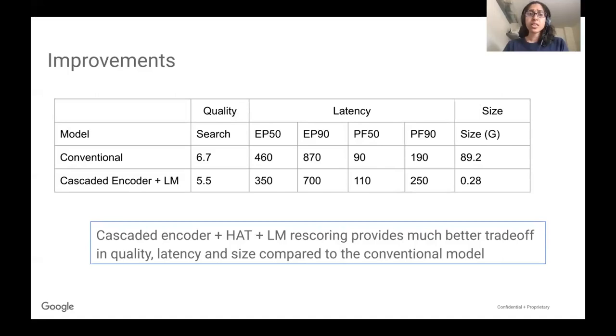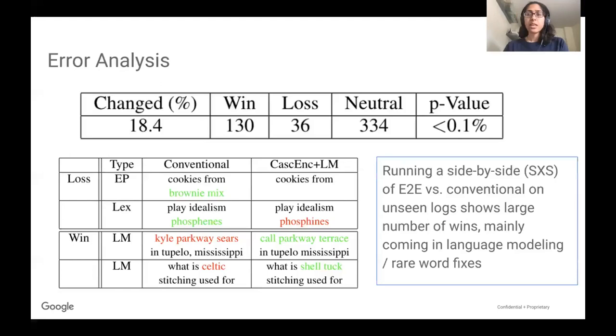In terms of improvements with cascaded encoder plus LM over conventional, we see large improvements in quality. The end-pointer and prefetch latencies are also faster, and the model is 300 times smaller compared to conventional.